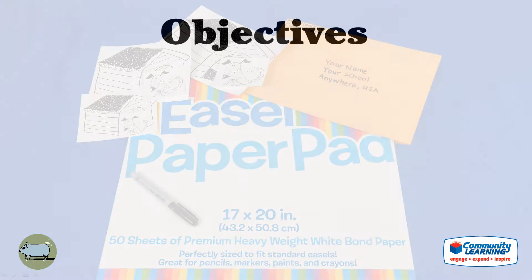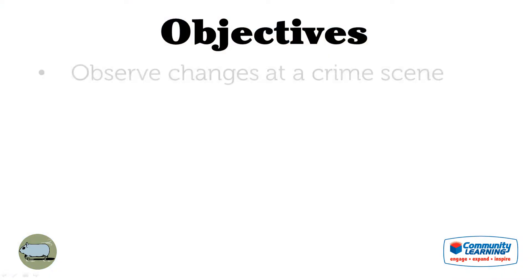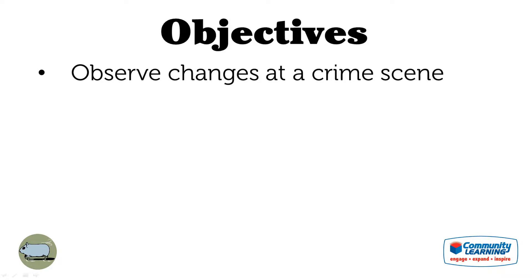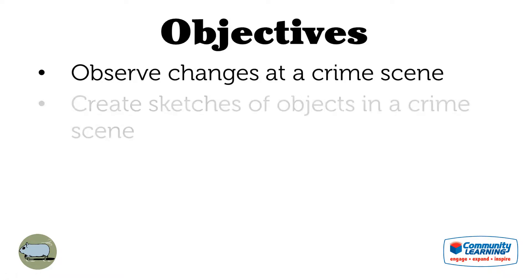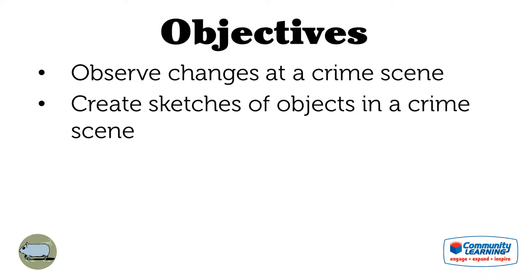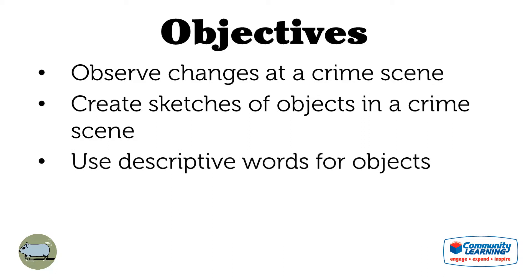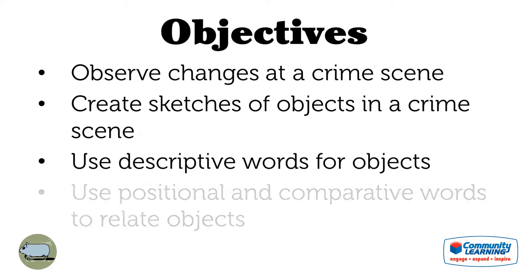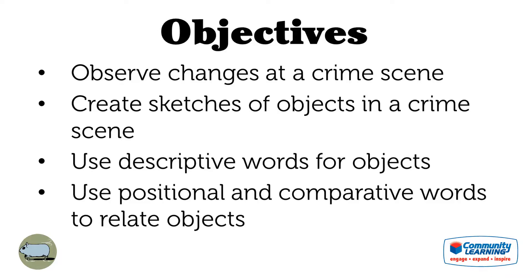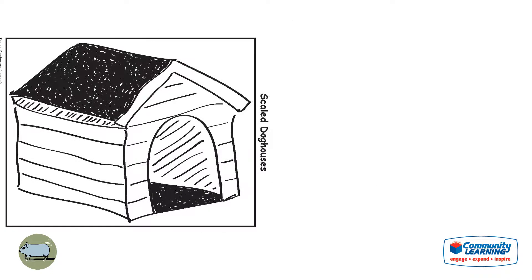In this lesson, students will observe changes that have occurred at a staged crime scene, create sketches that represent physical relationships of objects in a crime scene, use descriptive words to illustrate objects, and use positional and comparative words to communicate the relationship of objects to one another.